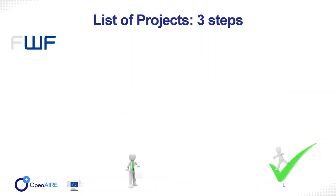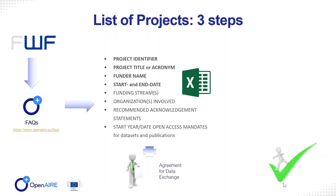More specifically, a funder wishing to join Open Air should follow these steps. First, visit the Open Air web page and under the support tab find the frequently asked questions — questions related to the Founder Monitoring Dashboard are listed under reporting statistics. After acquiring all appropriate information and making contact, a funder should provide an Excel file listing a very limited set of metadata. The mandatory fields are the project identifier, project title or acronym, founder name, and start and end date of the project.